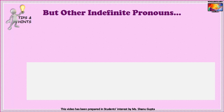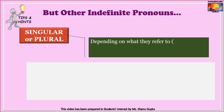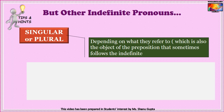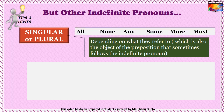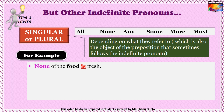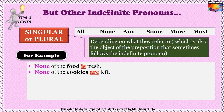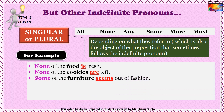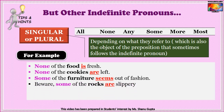The third and last set of indefinite pronouns — 'all,' 'none,' 'any,' 'some,' 'more,' and 'most' — could be singular or plural depending on what they refer to. Examples: 'None of the food is fresh' — 'none' refers to 'food,' which is uncountable and singular, so 'is.' But 'None of the cookies are left' — 'none' refers to 'cookies,' which is plural. 'Some of the furniture seems out of fashion' — furniture is uncountable, so 'seems.' But 'Some of the rocks are slippery' — rocks is plural.